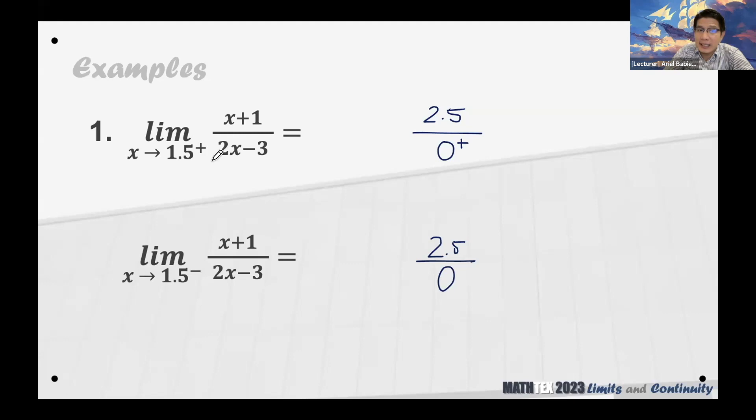1.5 from the right are values that are greater than 1.5. Greater than 1.5, if you multiply that by 2, it is greater than 3. Greater than 3 minus 3 will be positive. So that's why for this one you're going to get positive infinity.